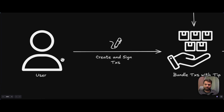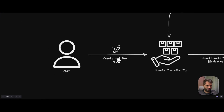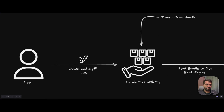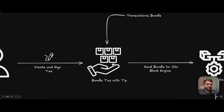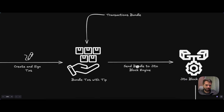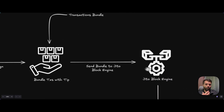The first step in the process is where a user creates and signs multiple transactions. Then those transactions are bundled into a bundle with a TIP instruction in the last transaction of that transaction bundle. Then that transaction bundle is sent to the Jito block engine, which verifies whether the transactions will actually execute or not.